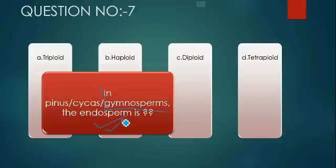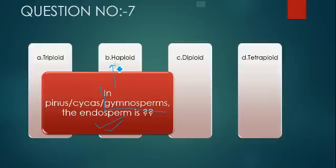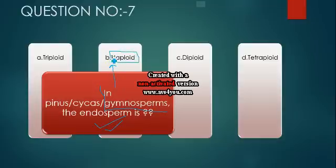When there are options like vitamins, starch, or proteins alongside fats, fats will always give the maximum energy. So the answer is fats. Now, question 5: intercostal muscles occur where?